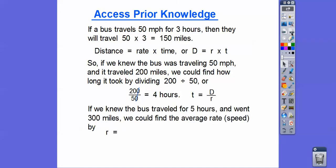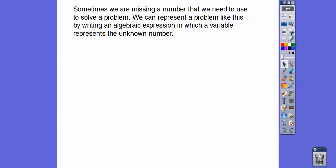What if we knew that the bus traveled for five hours and it went 300 miles? We can find the average rate by doing the distance divided by the time. So 300 divided by 5 gives us 60 miles per hour. These are just versions of d = rt: time equals distance divided by rate, or rate equals distance divided by time — it just depends on what's given.